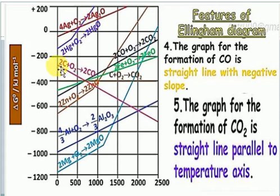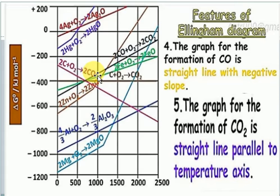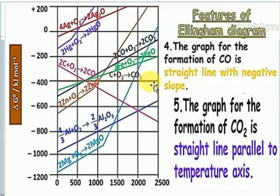The fourth feature is that the graph for formation of carbon monoxide is a straight line with a negative slope. This means carbon monoxide becomes more stable as temperature increases, so at high temperature carbon monoxide acts as the best reducing agent compared to carbon. The graph for formation of carbon dioxide is a straight line parallel to the temperature axis, meaning increasing or decreasing temperature has no significant effect on CO₂ as a reducing agent.